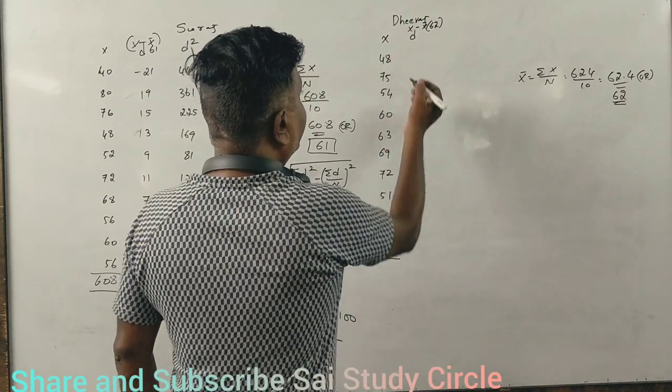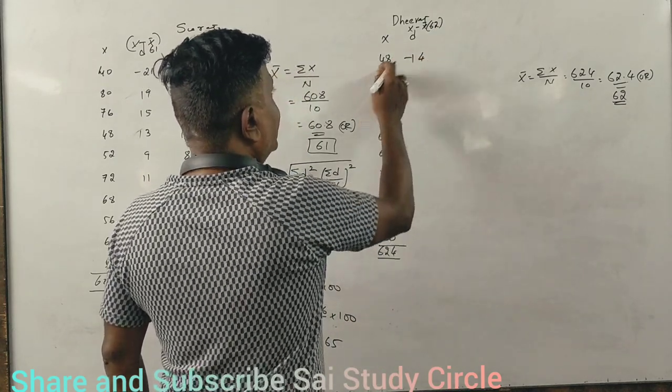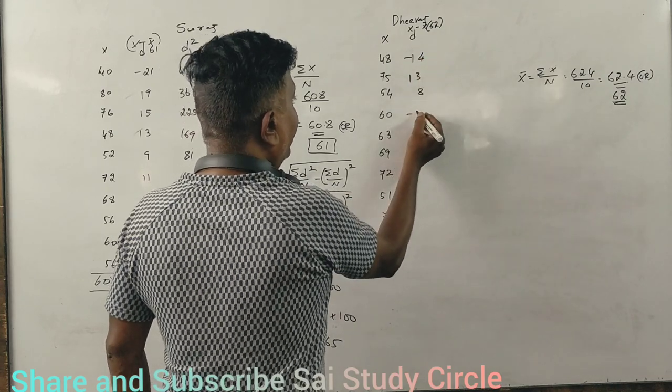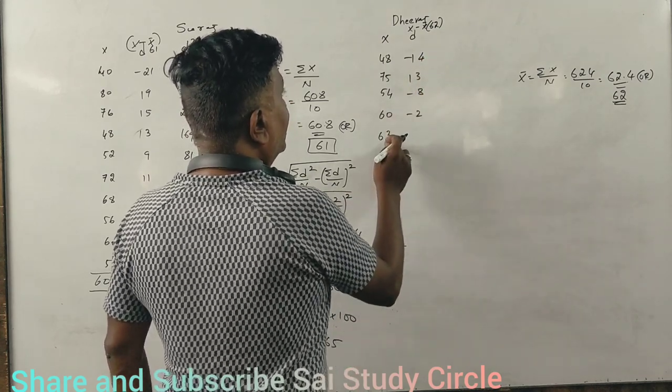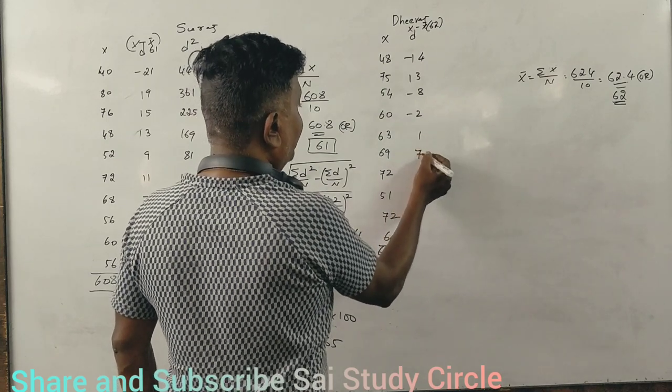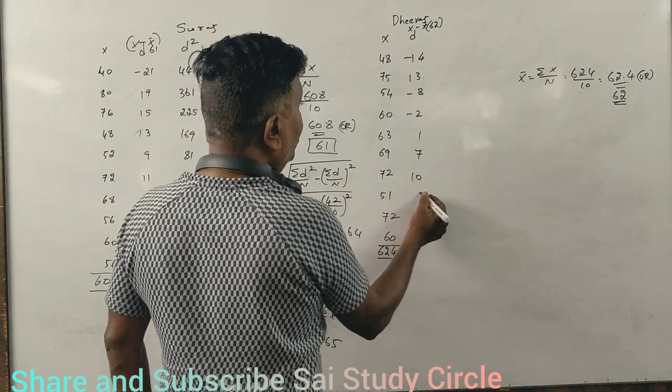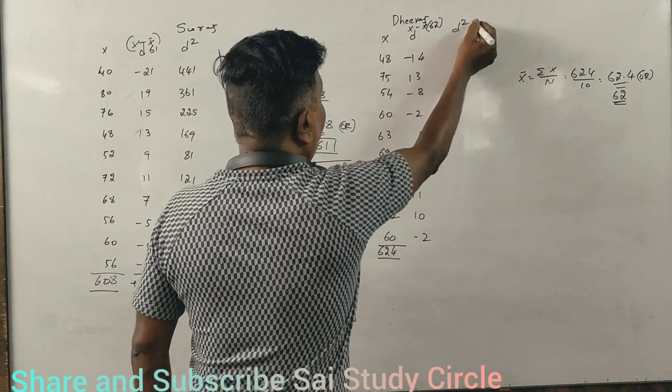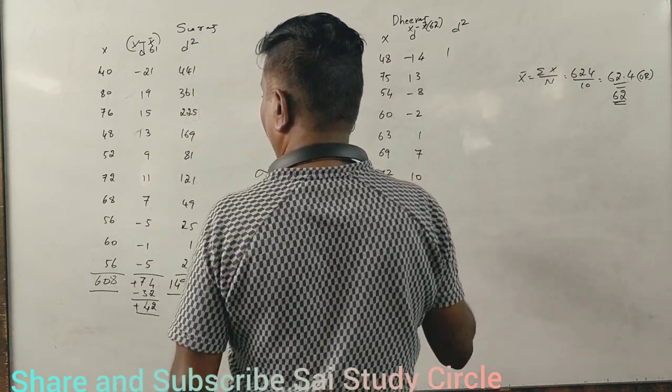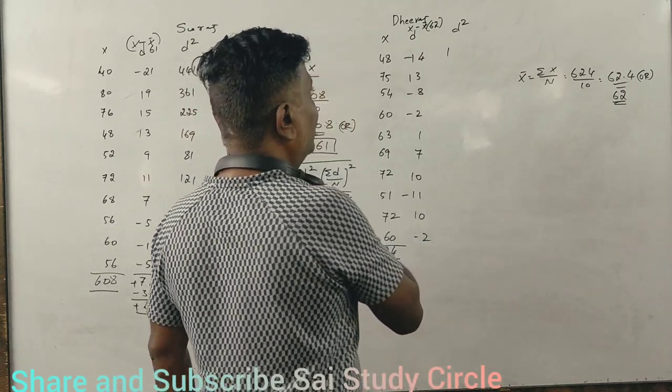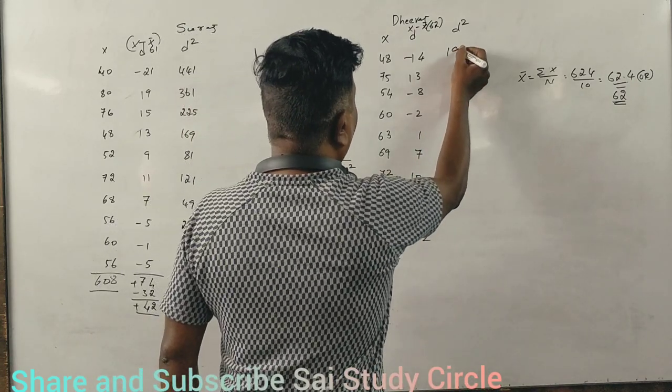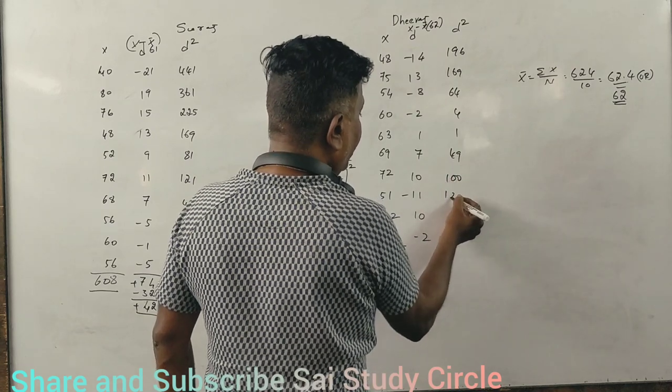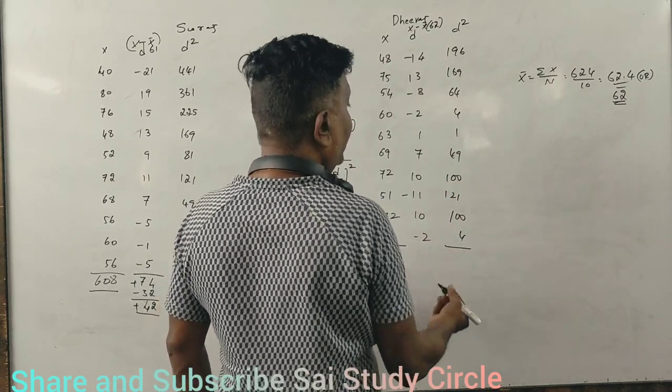48 minus 62 is minus 14. 75 is 13. 54 is minus 8. 60 is minus 2. 63 is plus 1. This is plus 7. This is plus 10. This is minus 11. This is plus 10. This is minus 2.